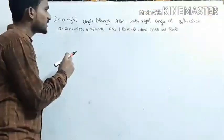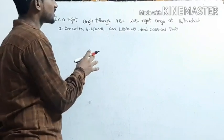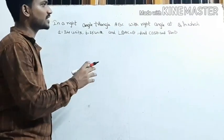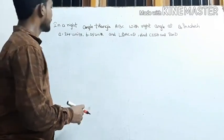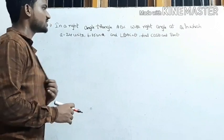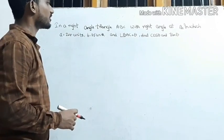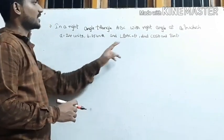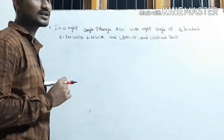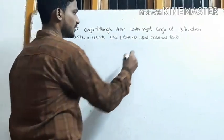Problem: In a right angle triangle ABC with right angle at B, in which AB equals 24 units, AC equals 25 units, and angle BAC equals theta. Find cos theta and tan theta.